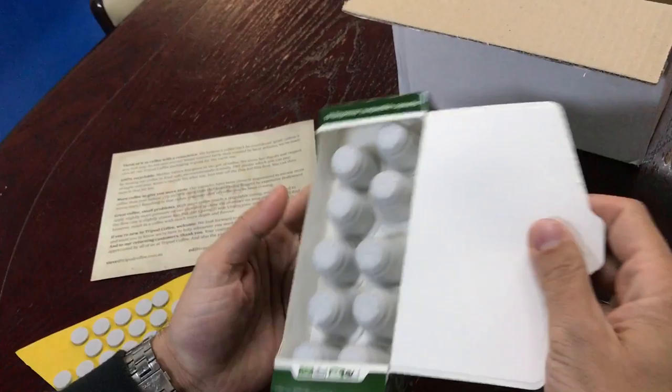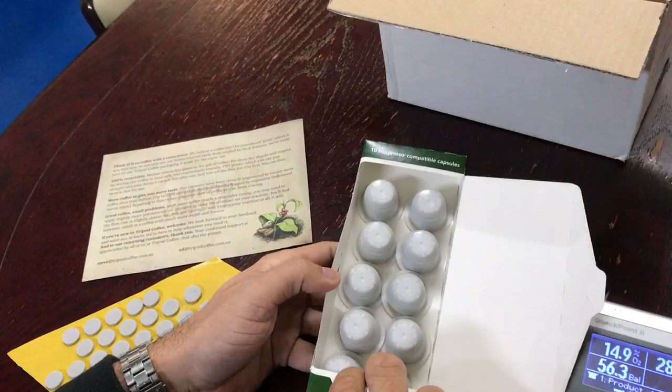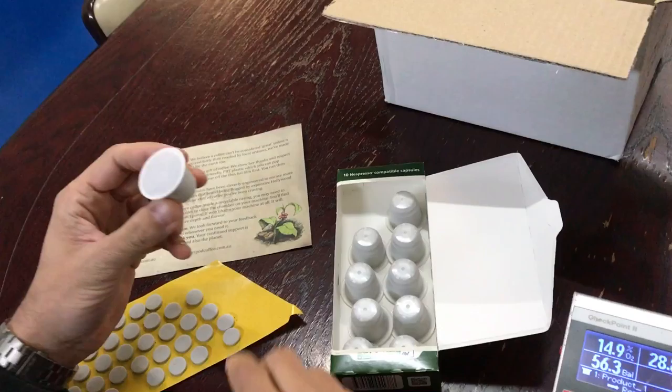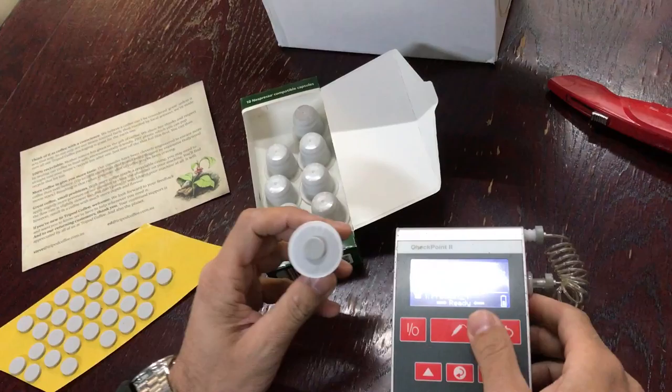So the capsule uses no external overwrapping, so we'd need the capsule to be hermetic. So it's fresh, so there would need to be barrier properties in the capsule. We're going to test that now. We'll test four of them just to check consistency across the lot.